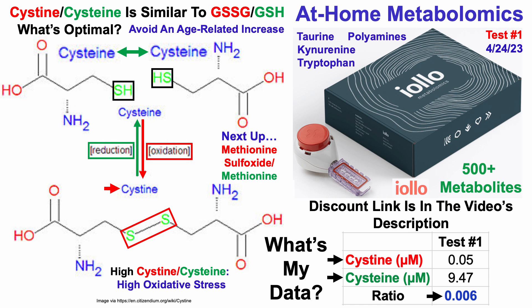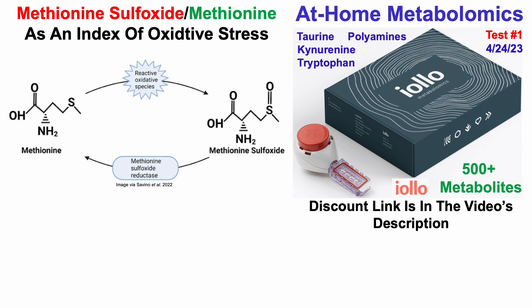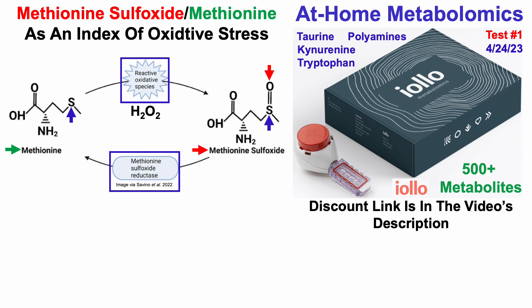Next up is the methionine sulfoxide to methionine ratio, which can also be used as an index of oxidative stress. Starting with the amino acid methionine, it too has a sulfur atom, which can be oxidized — specifically in the case of H2O2 — such that its sulfur atom becomes oxidized, forming an S double bond O (oxidized sulfur), thereby forming methionine sulfoxide. As a side note, this is a reversible reaction where methionine sulfoxide can be reduced back into methionine by the enzyme methionine sulfoxide reductase.